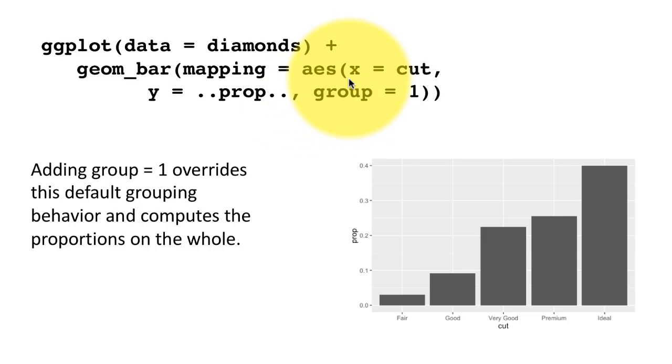In general, whenever applicable, the default grouping is by the x variable. That is the default grouping. If you want to say, no, I don't want you to group by x variable, I want you to group by the whole thing, then you can say group equals one.